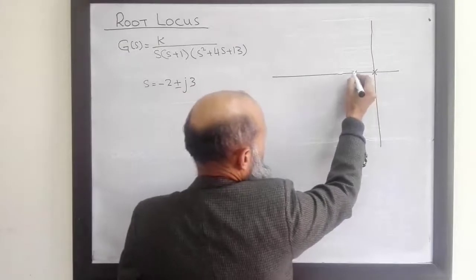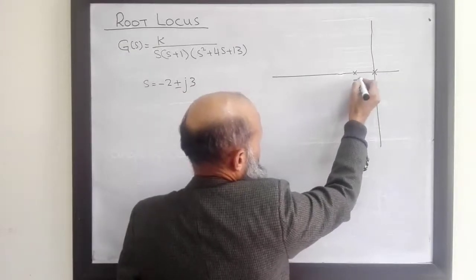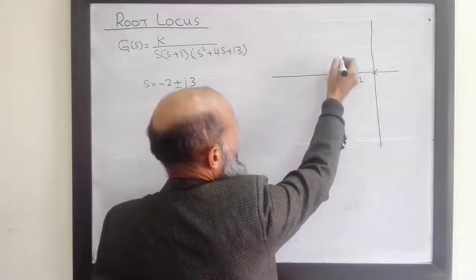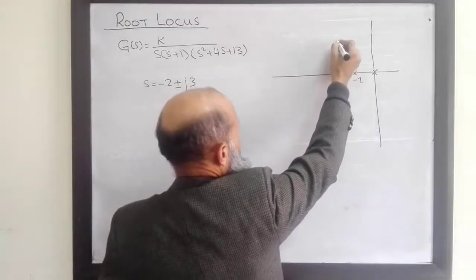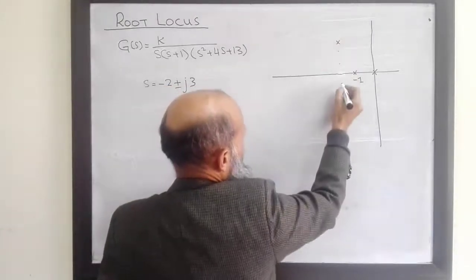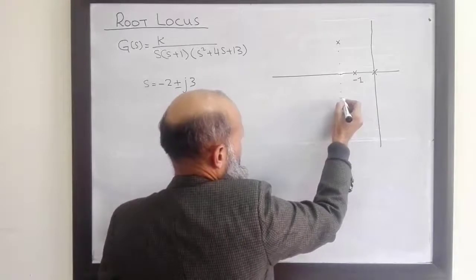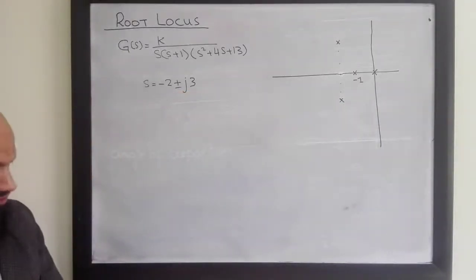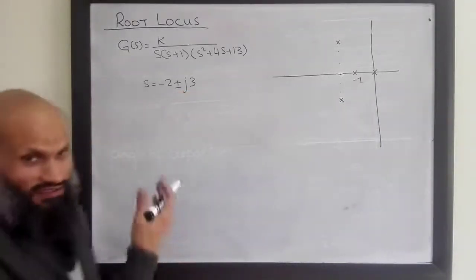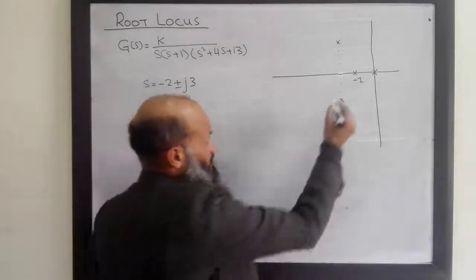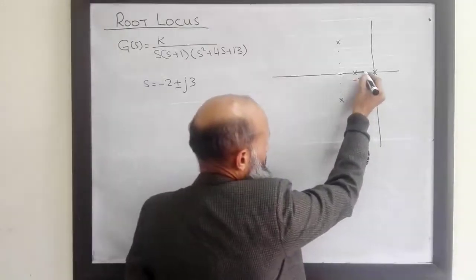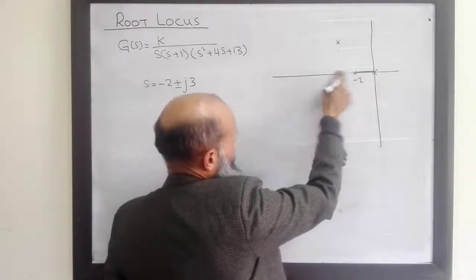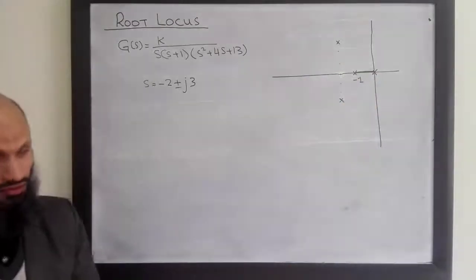Plotting these: -1 is here, then -2 ± j3 as complex conjugate poles. Here is the location of the open-loop poles. Now apply the real axis root locus rule. The segment to the left of -1 is part of the root locus, but the segment between 0 and -1 is not part of the root locus.